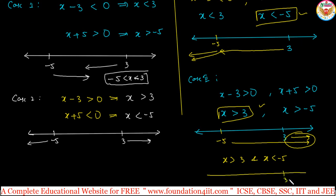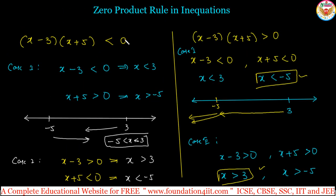From 3 to the right side all the values, and from minus 5 to the left side all the values. The main point to remember: when the product is less than 0, two cases — one expression positive and one negative. When the product is greater than 0, both are positive or both are negative. For exam problems of this type, consider both cases separately, solve them, and represent together on the number line. These are the basic things about product inequalities.